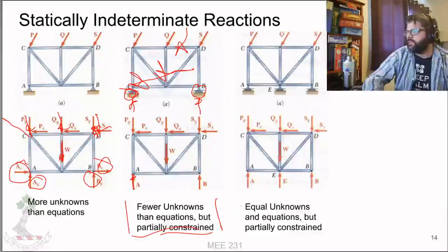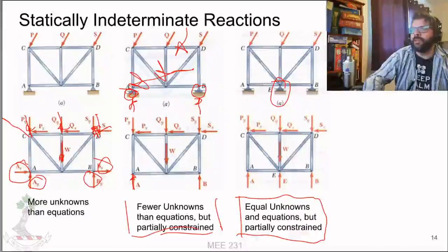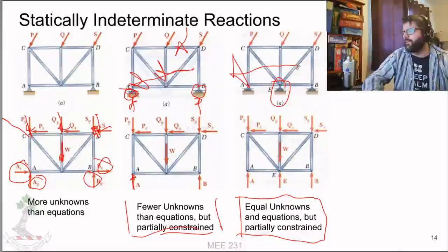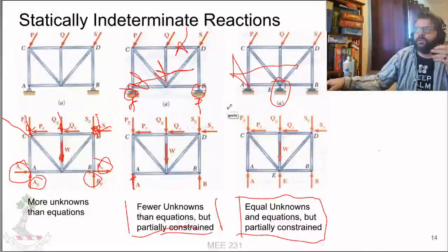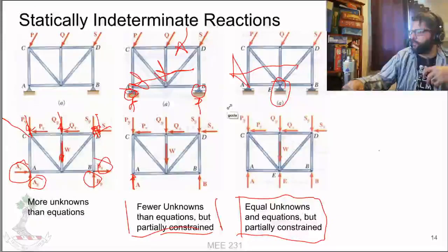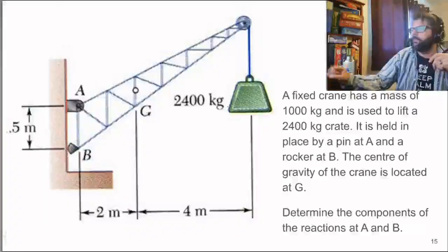Adding an extra roller doesn't fix partial constraint - you're still going to have your frame rolling down the street. To analyze structures using these equations you need to be properly constrained and have equal unknowns and equations. Let's go for a quick example: a fixed crane with a given mass being used to lift a crate, held in place by a pin at A and a rocker at B.